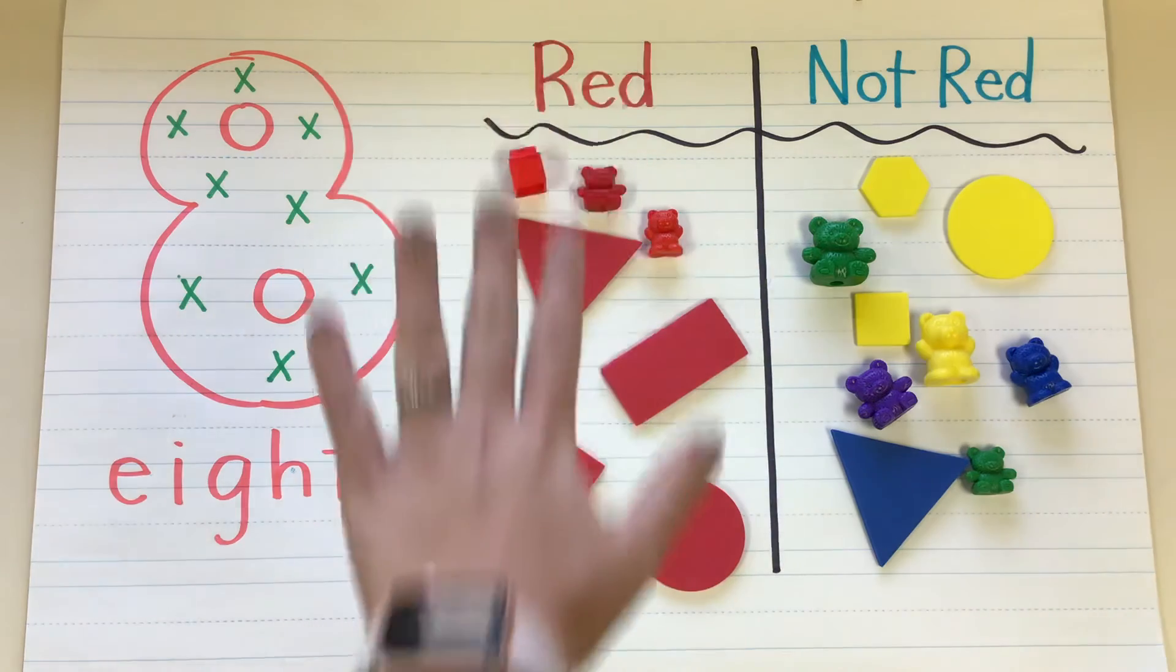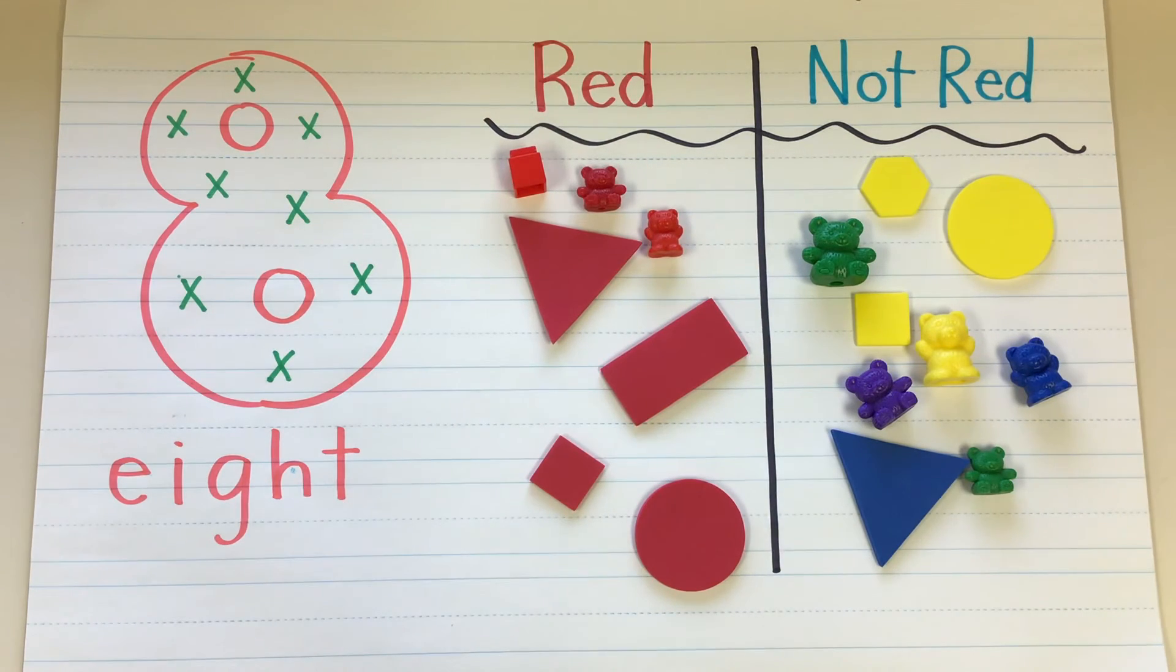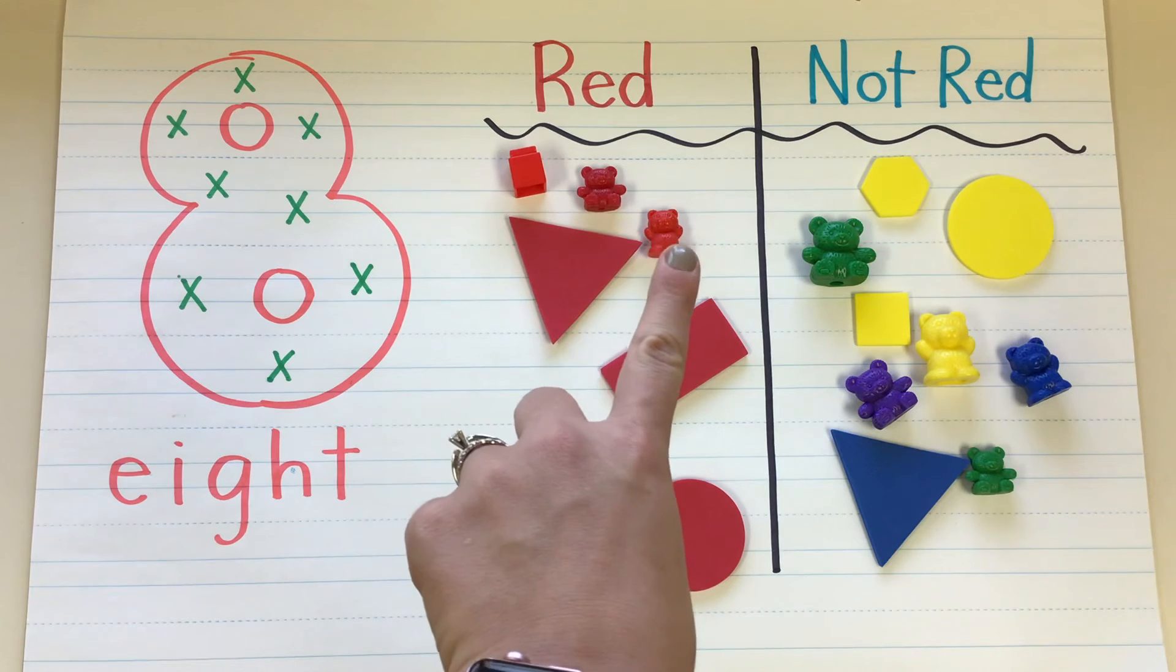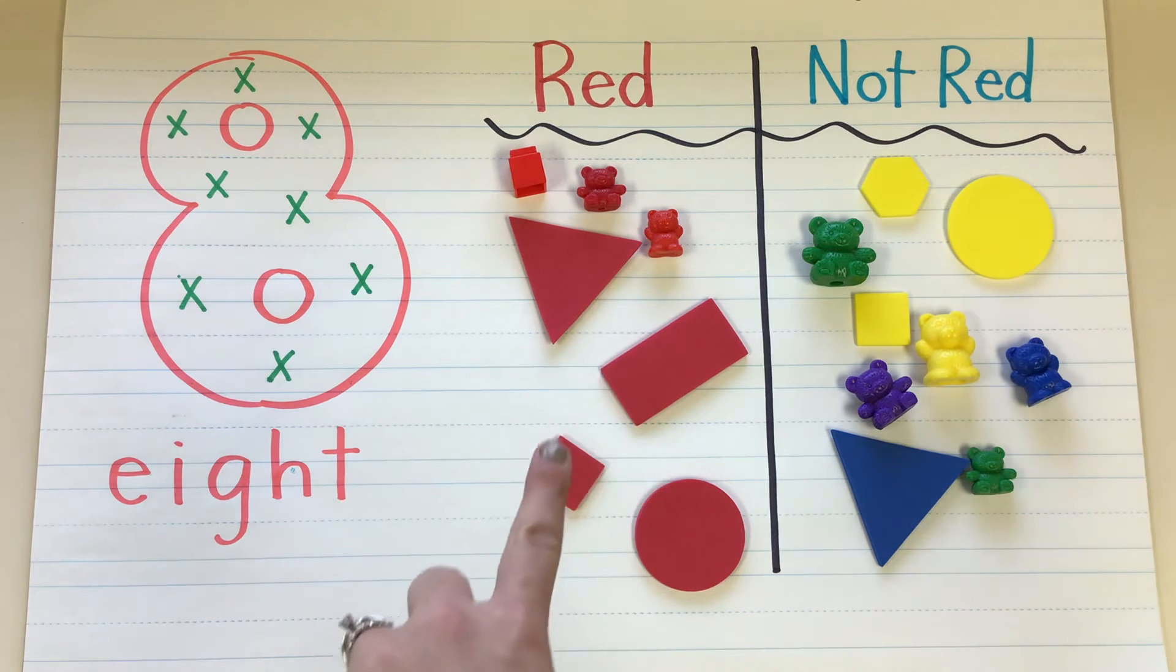So over here we have all of our objects that are red. Let's count how many are red. One, two, three, four, five, six, seven. Seven objects were red.